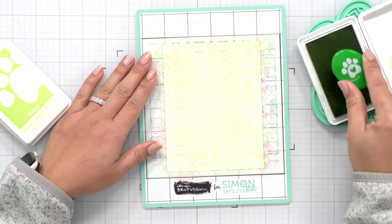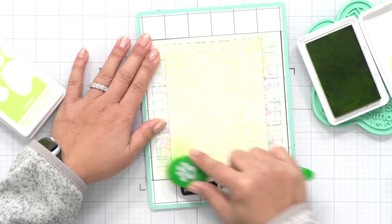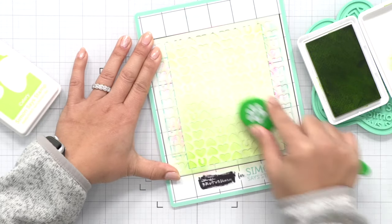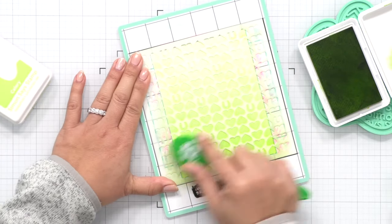I consider myself to be a very slow ink blender. It takes me a while to get all the colors on there in the exact tone or saturation that I like. I've seen people ink blend so fast and I'm always like how do you do that?